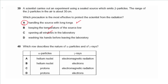Question 40 asks which row describes the nature of alpha particles and gamma rays. Alpha particles are helium nuclei and gamma rays are electromagnetic waves, so the correct choice is A. This was the end of the exam — I hope you enjoyed this video, keep practicing, and I will see you in another video.